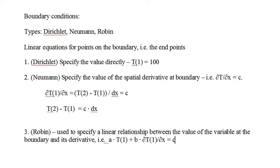A Dirichlet boundary condition specifies a fixed value of the variable at the boundary. So to specify that temperature at the left boundary is a fixed 100 degrees, the linear equation is T1 equals 100. A Neumann boundary condition specifies the value of the spatial derivative of the variable at the boundary — for example, to specify that the spatial derivative of temperature at the left boundary equals C, the equation is T2 minus T1 divided by dx equals C, giving the linear equation T2 minus T1 equals C times dx. A Robin boundary condition specifies a general linear relationship between the value of a variable at the boundary and its derivative; we will cover Robin boundary conditions in the next video.